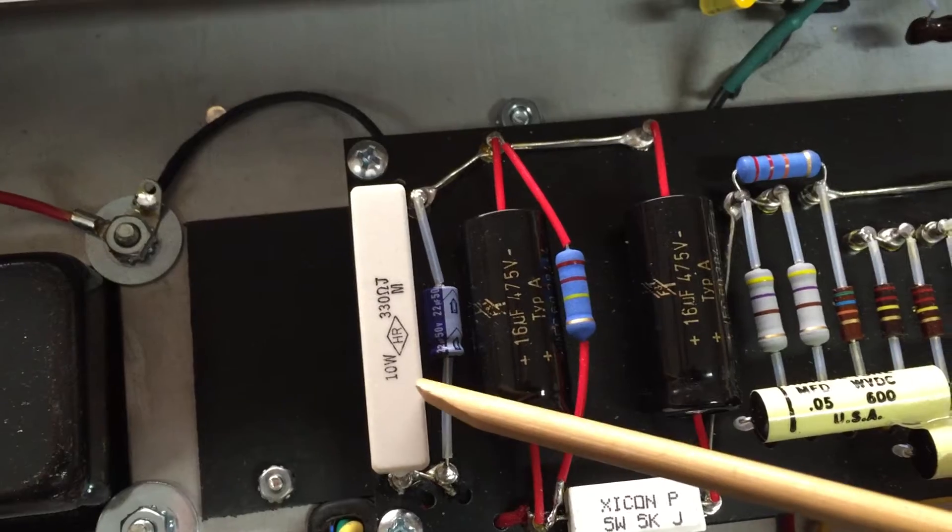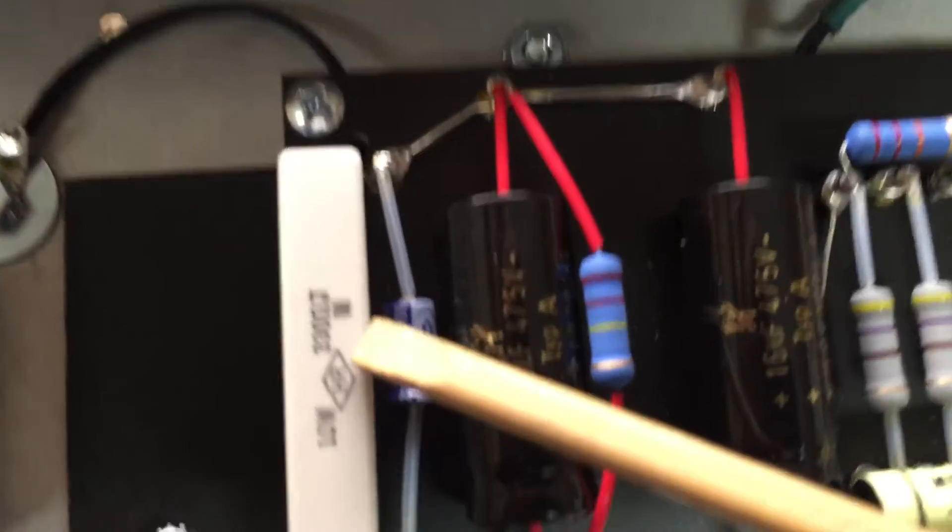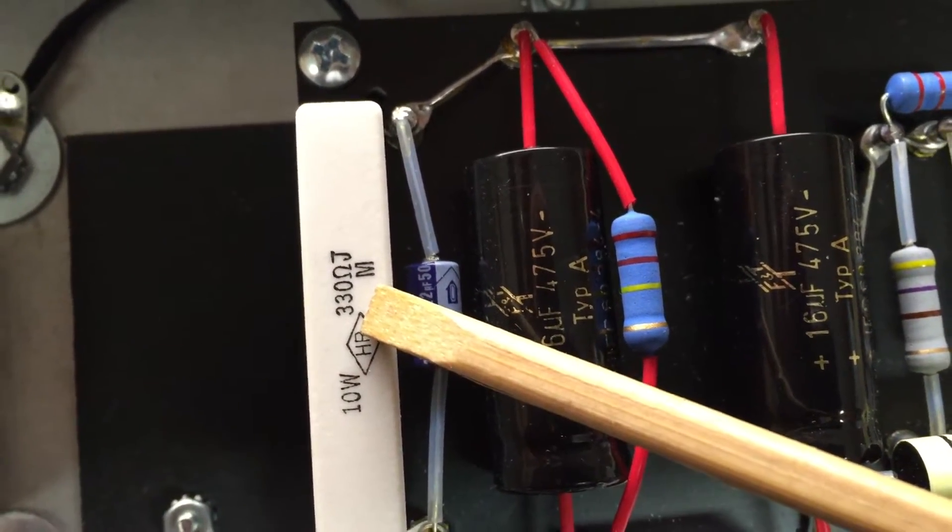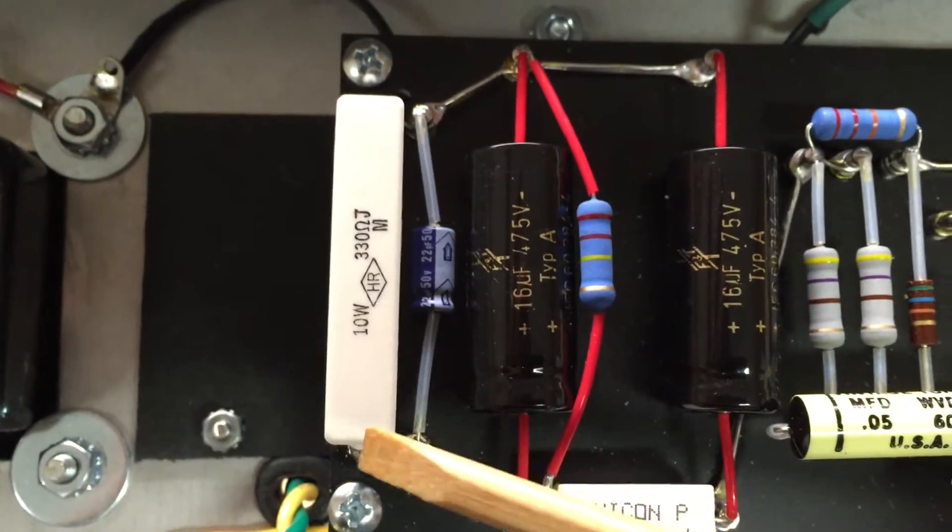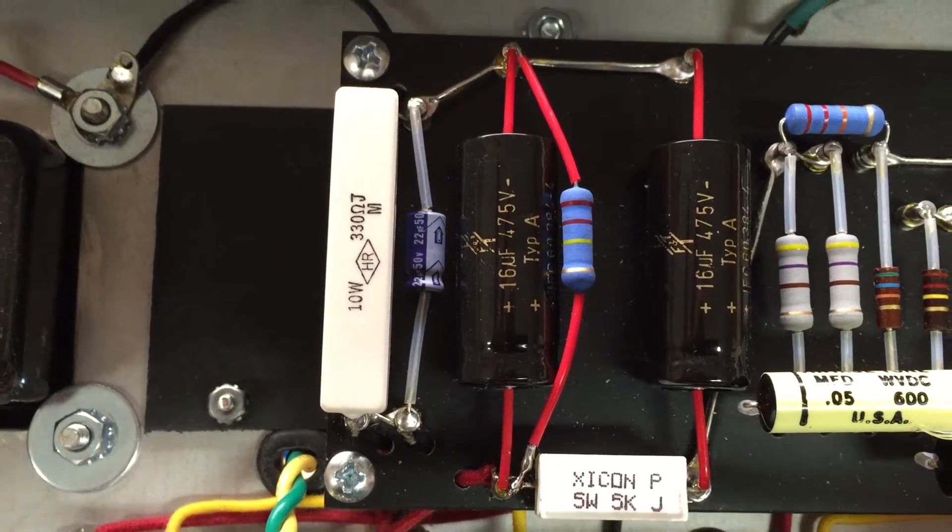This resistor right here, your cathode resistor, dropped down to 330 ohms from 250 on the schematic. This will cool your tubes off a little bit because these guys have a tendency to run hot and wear out tubes.